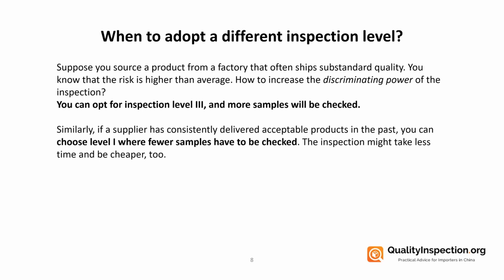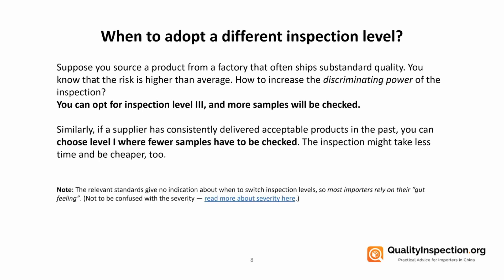On the other hand, if a supplier is doing really well and you're really happy and trust them, then you could choose level 1, where fewer samples need to be checked. The upside of this is that the inspection will take less time and probably be cheaper too. You need to note that for importers, the relevant standards don't actually indicate when to switch inspection levels, so you need to rely on your gut feeling. If you're having trouble, perhaps it's time to crank up the inspection level a notch.